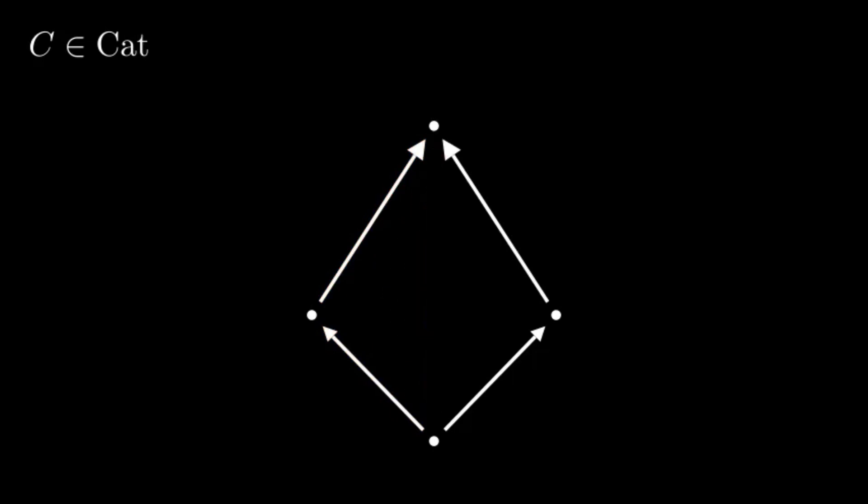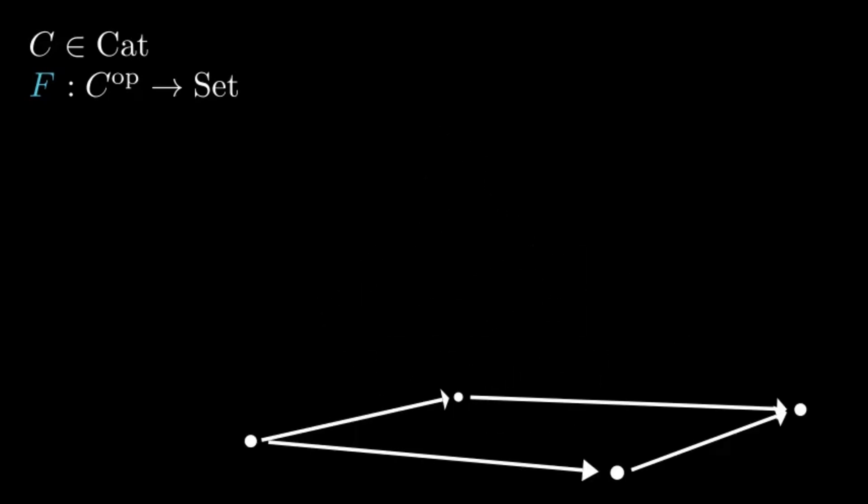Having a category C, giving a pre-sheaf on it means hanging a set over each object of C and specifying how elements of those sets are pulled back along arrows of C.